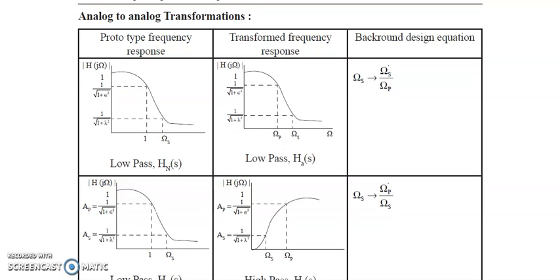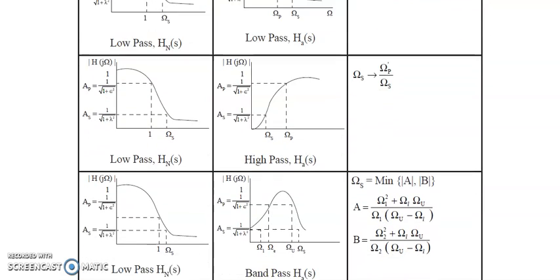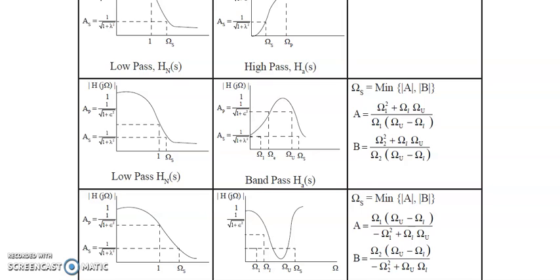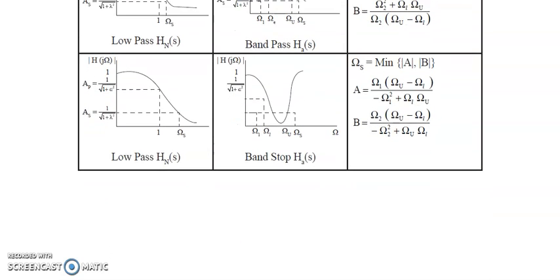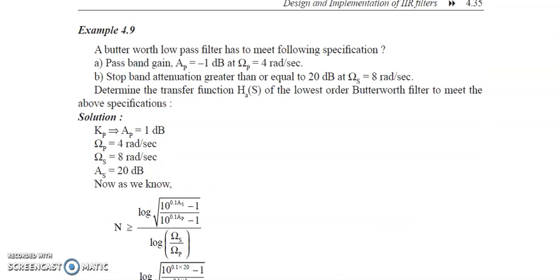I will do some numericals so we will be more clear about the transformation. Let me do a low pass to high pass conversion and a low pass to band pass conversion, and then we will do some practice problems. Now let us focus on this problem: a Butterworth low pass filter with passband gain ap = −1 dB at Ωp = 4 radian per second.